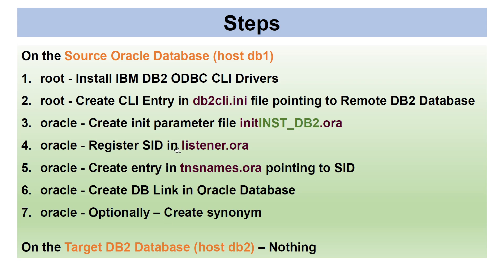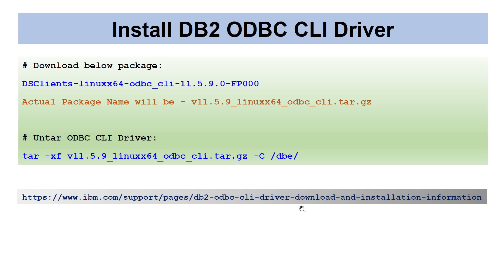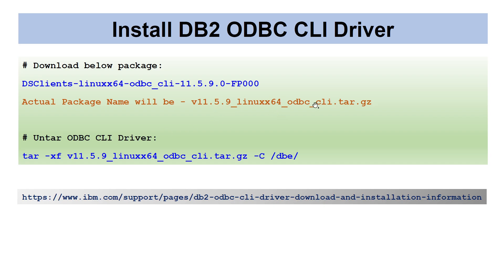Let's look at the link where the ODBC driver is downloaded. You will select the ds_clients ODBC CLI package. The actual package that gets downloaded is the same one — we are downloading the 11.5.9 ODBC CLI driver. The reason for 11.5.9 is that my DB2 version is 11.5.9; based on your DB2 version you may need a different ODBC CLI driver.